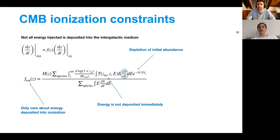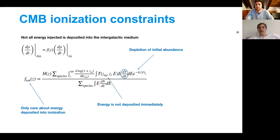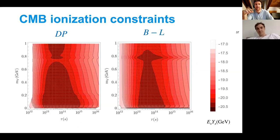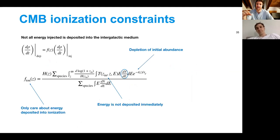That also enhances polarization in the CMB, so we can get pretty strong constraints since the CMB is so well measured. Not all of the injected energy is deposited into the intergalactic medium — you again have to process it through a series of thermal transfer functions, and you only care about what energy is deposited into ionizing the medium. You don't really care about what heats things up or produces low-energy photons. This is a weaker energy input that won't change the blackbody spectrum much but might change the ionization fraction.